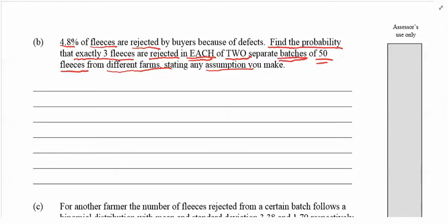From different farms, stating any assumptions that you make. There's a lot packed into this question. To get started, first identify the variable of interest. So what's the thing that we're actually counting? We're going to call that X. Let X represent the number of fleeces rejected.